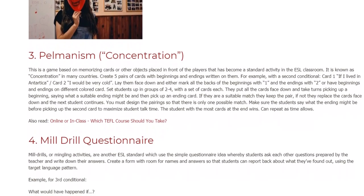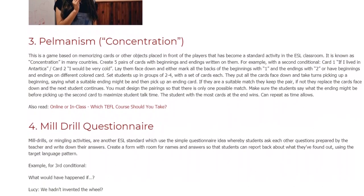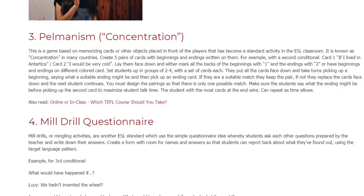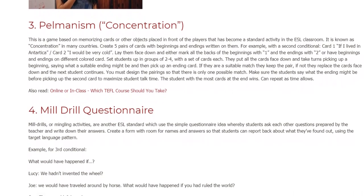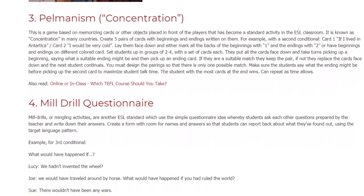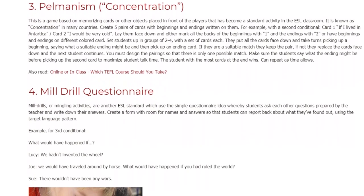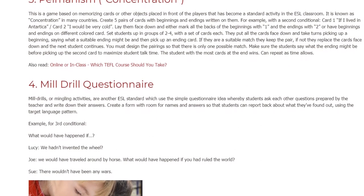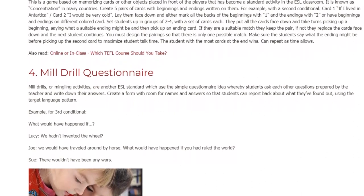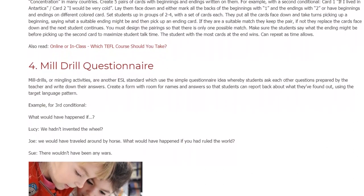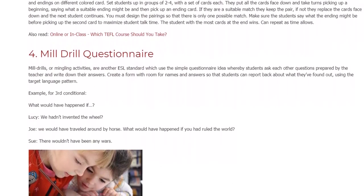Set students up in groups of 2-4 with a set of cards each. They put all the cards face down and take turns picking up a beginning, saying what a suitable ending might be, and then pick up an ending card. If they are a suitable match they keep the pair; if not, they replace the cards face down and the next student continues. You must design the pairings so that there is only one possible match. Make sure the students say what the ending might be before picking up the second card to maximize student talk time. The student with the most cards at the end wins. Can repeat as time allows.